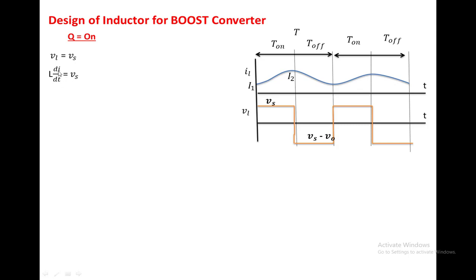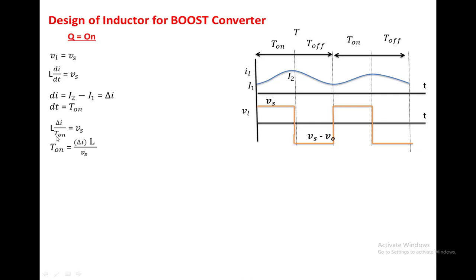di is nothing but the change in current — I2 minus I1 — that is equal to delta_i. The interval dt is equal to T_on. Substituting these two values in the above equation, we get L into delta_i divided by T_on equal to Vs. Finding the value of T_on: T_on equal to delta_i into L divided by Vs.